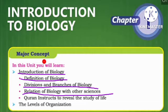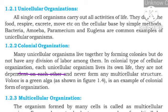Today we will study different types of organization on the basis of their complexities. The first organization is unicellular. Uni means one. Unicellular organisms are made by a single cell — they are made by one cell.